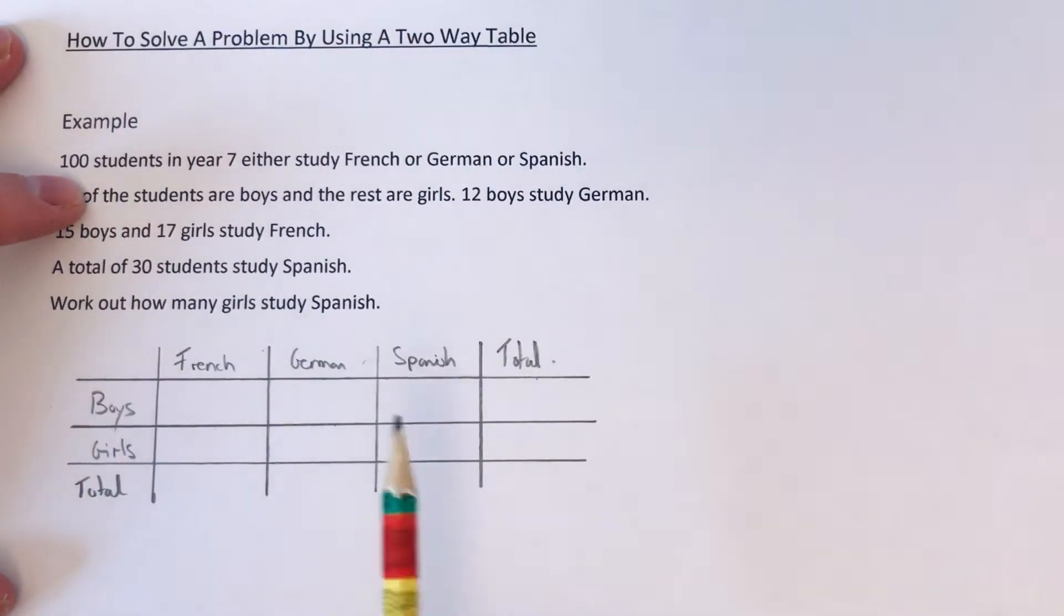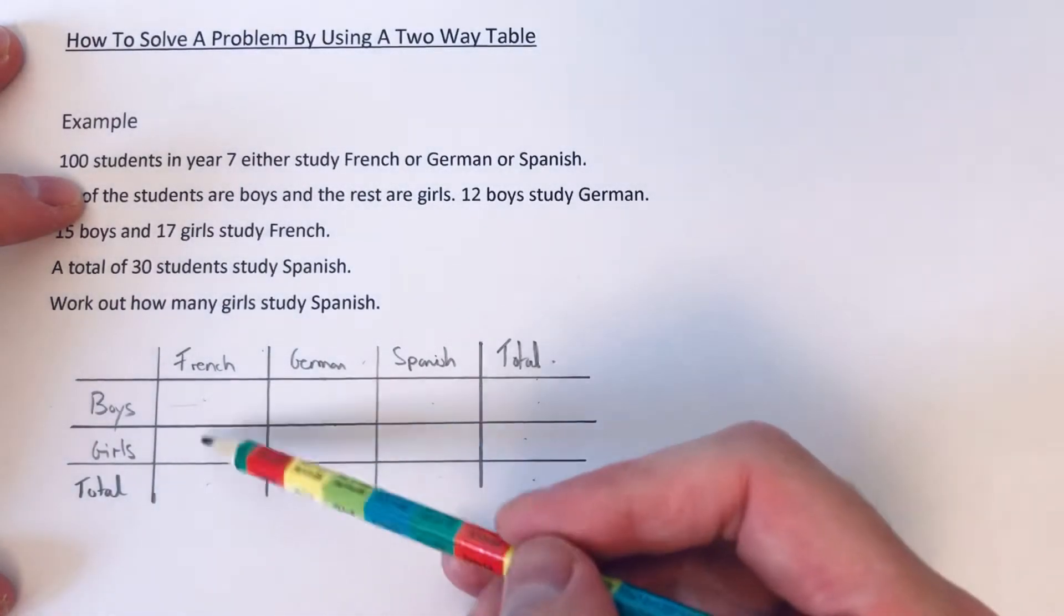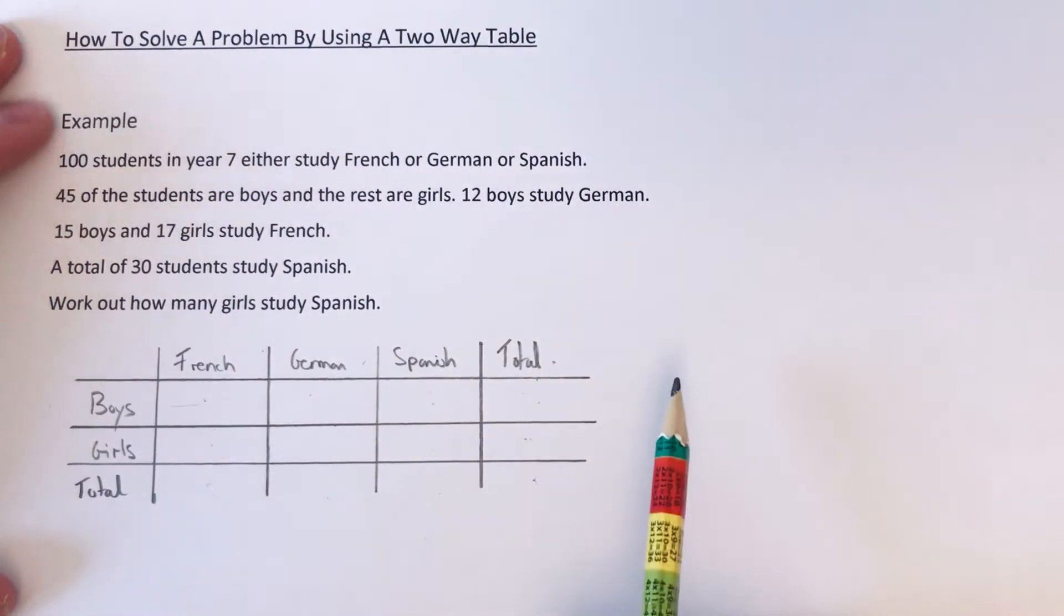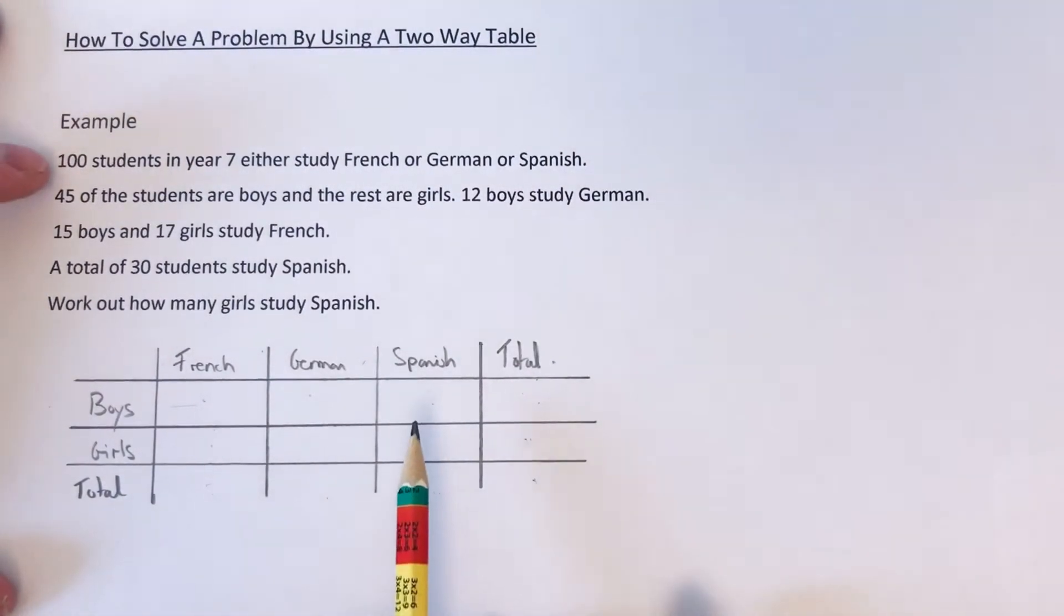So with a two-way table then, all the rows will add up to the number at the end, including the bottom row. And all the columns add up to the number at the bottom. Okay, so now I've drawn it up, I'm just going to fill the numbers that we have carefully into the two-way table.